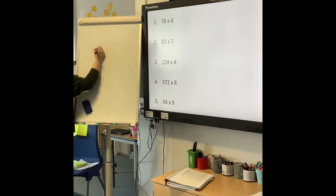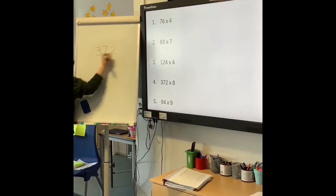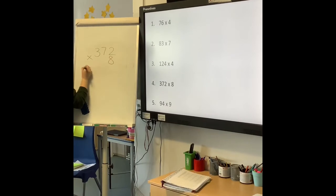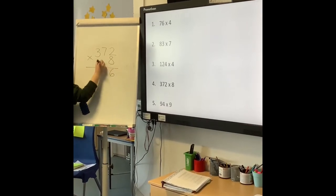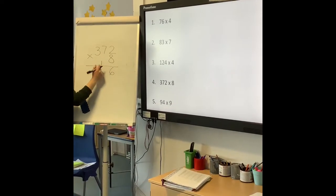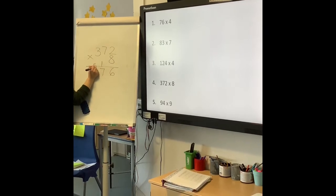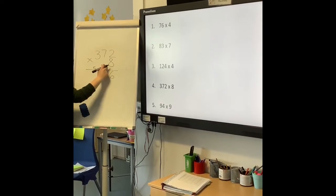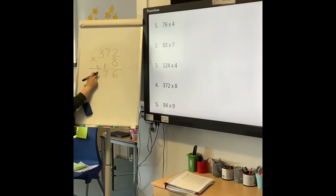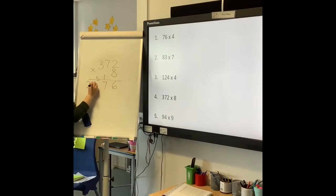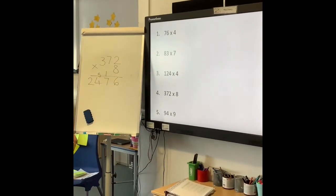Number 4, 372 times 8. 8 times 2 is 16, 7 times 8 is 56, add 1 is 57. 3 times 8 is 18, add 5 is 24. Put me on the spot there. The answer is 2,976.